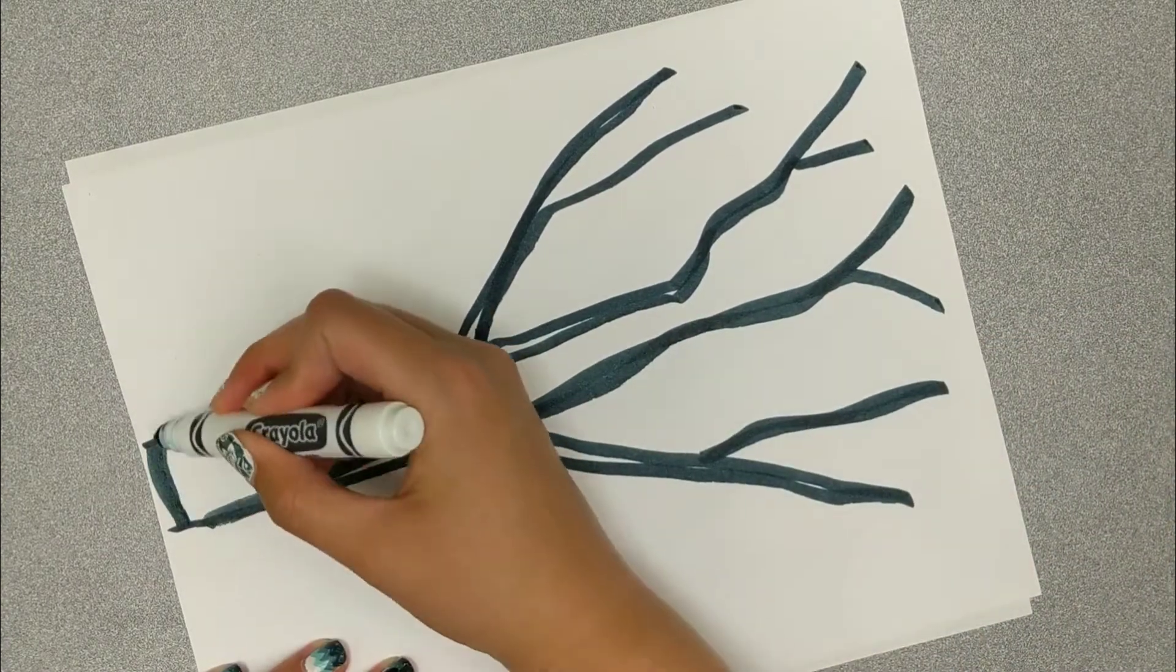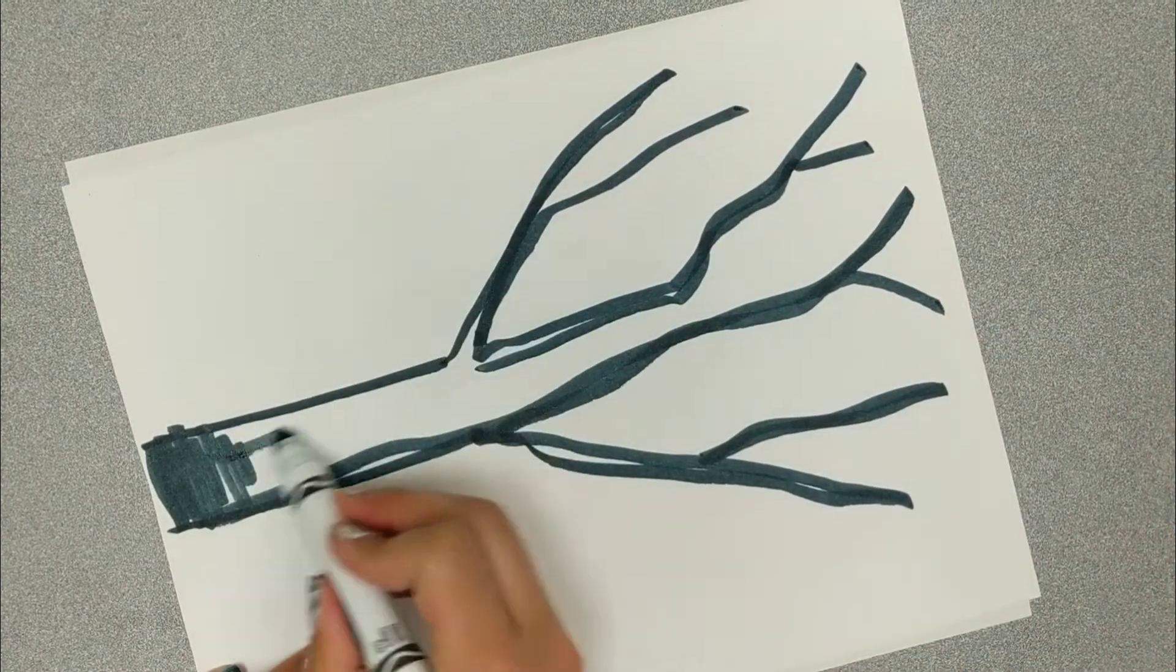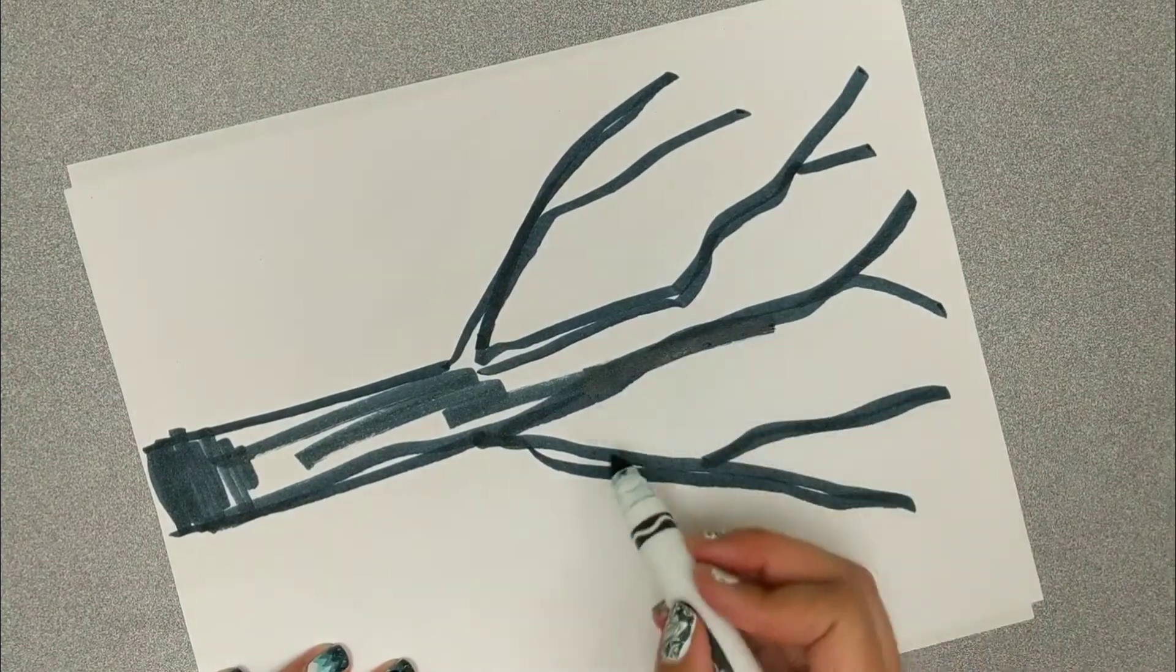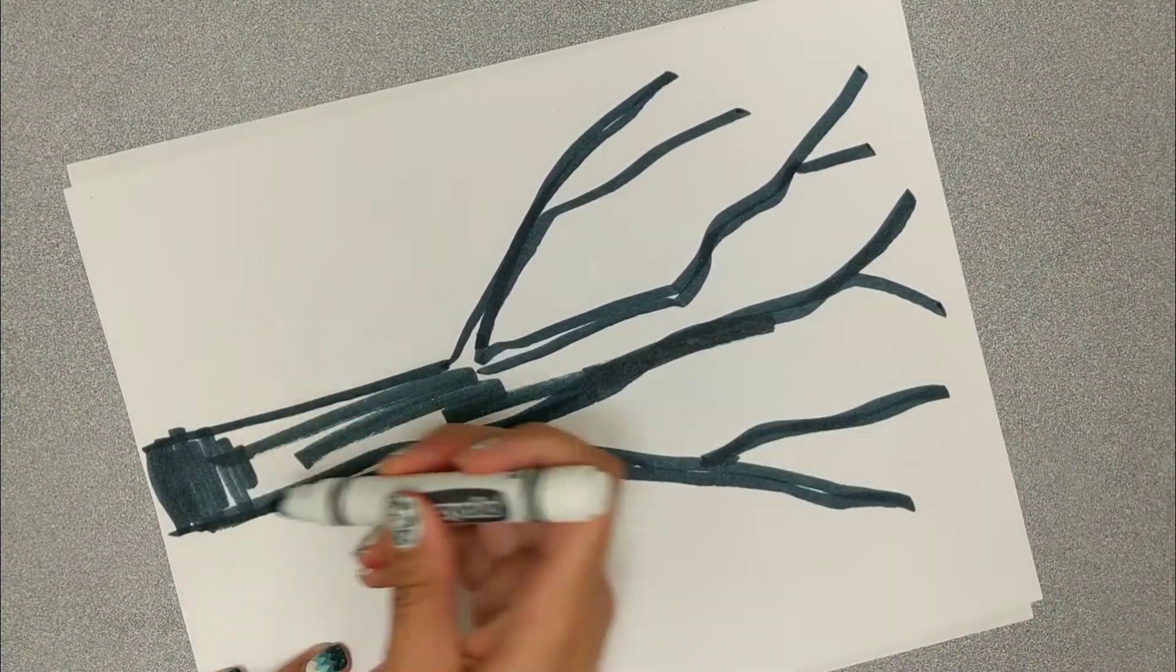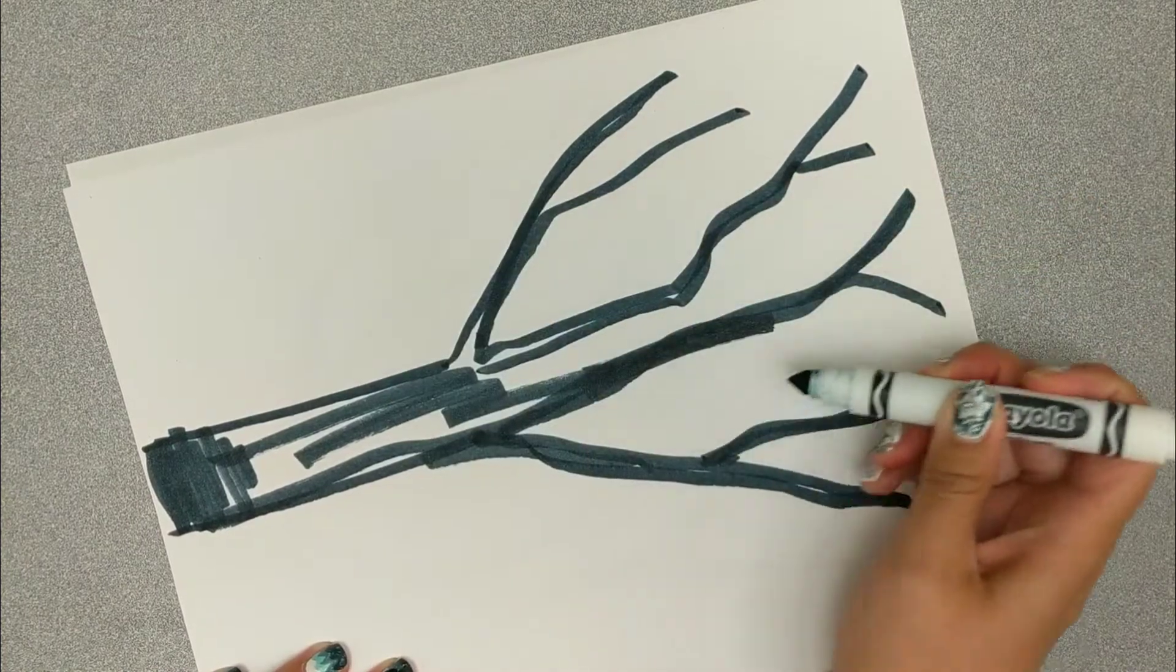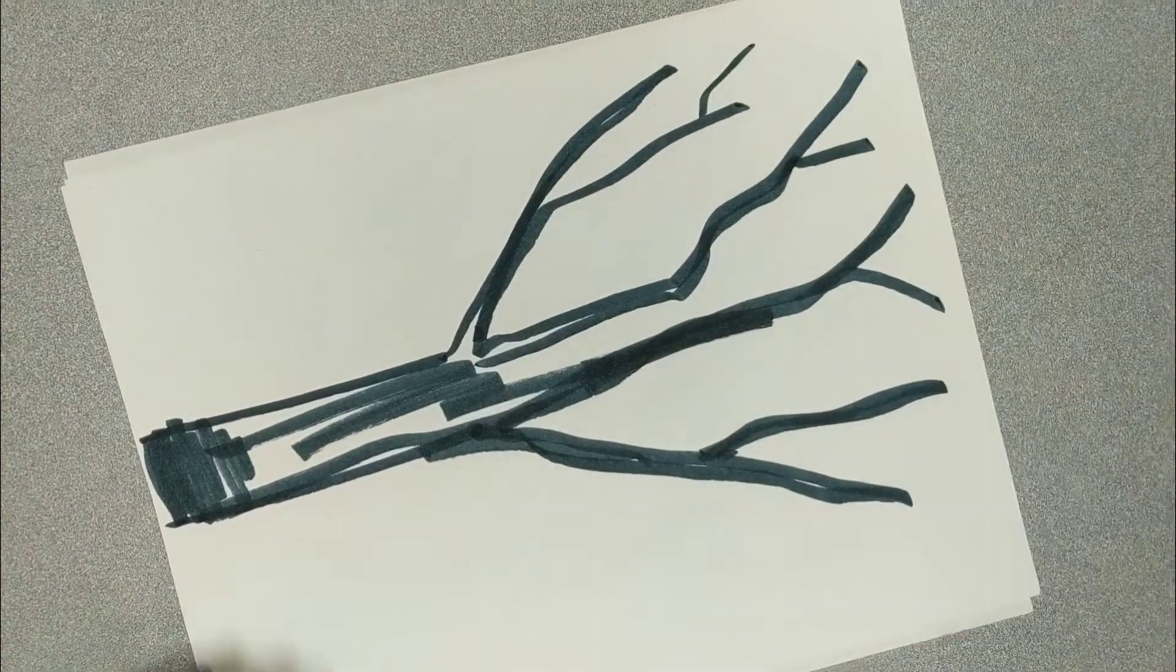And then coloring in the shape. I'm going to add more. The ones closer to back here will be a little bit thicker and they get smaller as they move out.